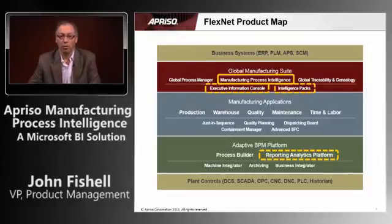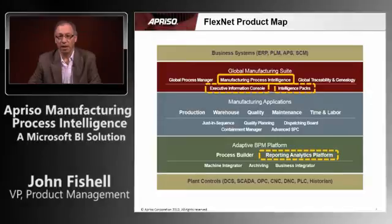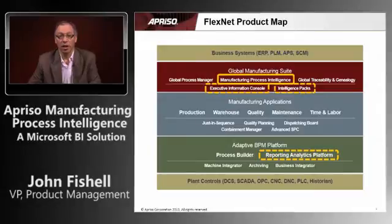MPI is a key tool for doing analysis, common reporting, and being able to push down from the top a standardization on how things should be reported and determined. Along with MPI, we have the intelligence packs, which reside in the Global Manufacturing Suite, and we have the reporting analytics platform that is part of our standard platform. I've also highlighted here the executive information console — this is a new area that we're introducing, and I'll talk about later on in the presentation.